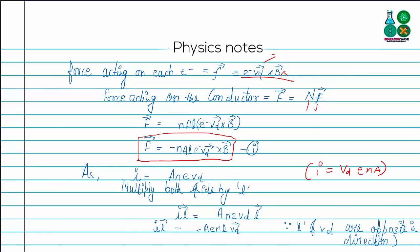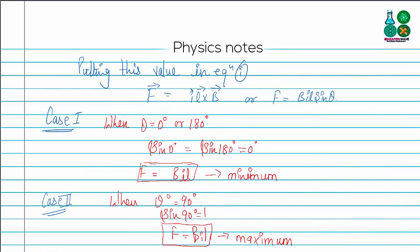If we multiply both sides by L, we get I times L equal to n times A times e times Vd times L. Substituting this value in place of nAeVdL, we get the total force on the conductor equal to BIL, or F = BIL sin θ, since this is a vector quantity.